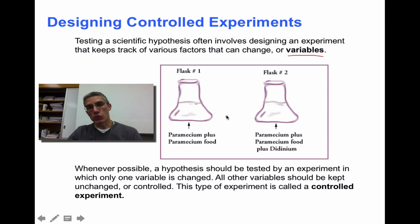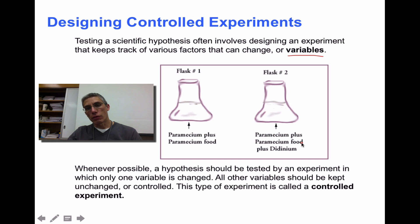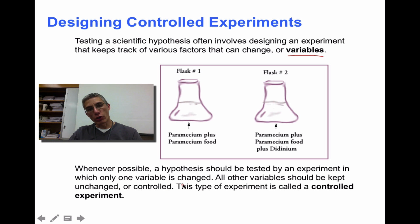Down here we have flask number one and flask number two, each containing a protozoan — a very tiny one-cell creature. Flask one has paramecium plus the food that creature would eat. In flask two we have paramecium and paramecium food, but we've changed it up by adding didinium, which is a second type of protozoan. Whenever possible, a hypothesis should be tested by an experiment in which only one variable is changed. The one thing that changed between the two groups is the addition of didinium in flask number two. All other variables should be kept unchanged or controlled.